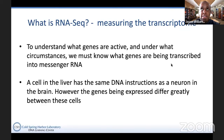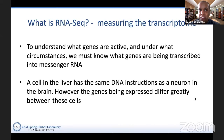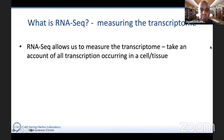For example, a cell in the liver has the exact same DNA instructions as a neuron in the brain. What makes those two cells different is that the genes being expressed differ greatly between them. Every cell in a eukaryotic multicellular organism has the same DNA, so you need to figure out what genes are actually being read and transcribed. RNA-Seq allows us to measure the transcriptome — the sum of all transcripts, all the gene transcription occurring in a cell or tissue.